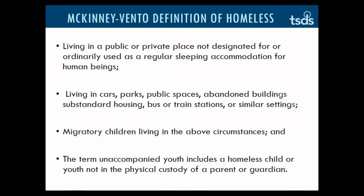The definition also includes those living in a public or private place not designed for or ordinarily used as regular sleeping accommodation for human beings — living in cars, parks, public spaces, abandoned buildings, substandard housing, bus or train stations, or similar settings. Residing in housing that has been so damaged by the storm — for example, no heat, no running water, no electricity, mold growing, severe overcrowding, lack of basic fundamental utilities — is considered substandard housing and therefore McKinney-Vento eligible. Situations where a family is living in the second story of their home because the first floor is flooded and they cannot use their kitchen or bathroom would generally be considered substandard and meets the McKinney-Vento definition.